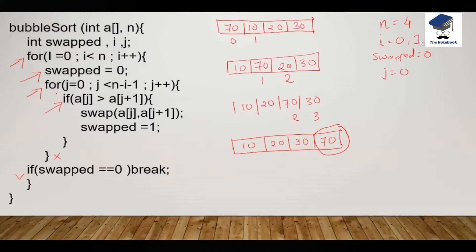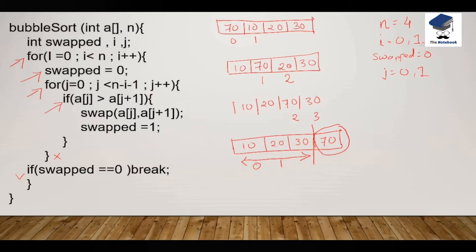Now when we go to the nested for loop once again, we make swap as 0 and j starts from 0. This time j will run till n minus 1 minus 1, that is 4 minus 1 minus 1, which is 2. So j will run till the second element. In the next iteration we only perform checks till the second element. We check a[0] is 10 and a[1] is 20: 10 is greater than 20 — no, we will not perform a swap nor change the value of swap. We increment j to 1. We check a[1] greater than a[2] — no, so we will not perform any swap. We increment j to 2. We check: 2 is less than 2 — no, and we terminate the nested for loop.